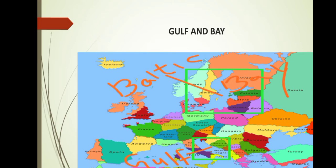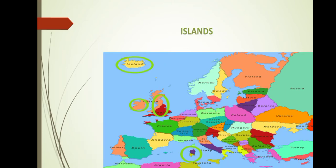There are many islands surrounding Europe. Britain, or England, is an island. An island is a landmass which is covered by water on all sides. To the extreme north you can identify one of the islands called Iceland. Beside Britain there is one more island — it is Ireland. Down in the Mediterranean Sea there are some more islands too.